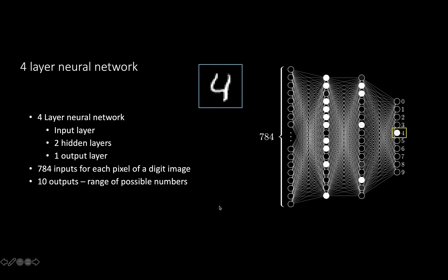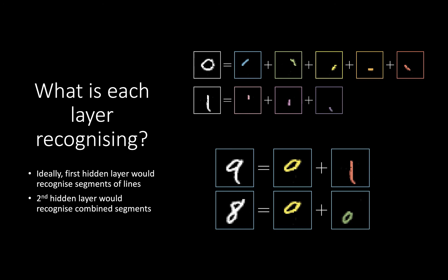It's 10 outputs, the range of possible numbers. Interesting thing about this, though, is that the neural networks can tell you what it thinks something is. It can't tell you what it thinks it isn't. That's a very important consideration, which limits the so-called intelligence of these systems.